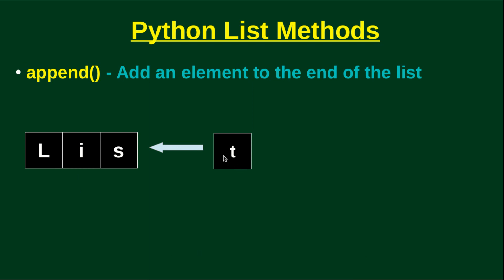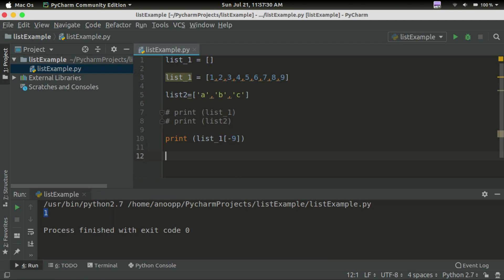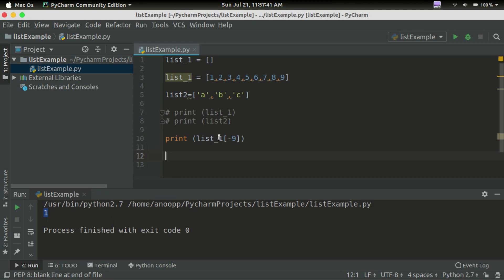We will add to the list using append. We will click here. I will already have list1. I will add 0 using append — list1.append(0).